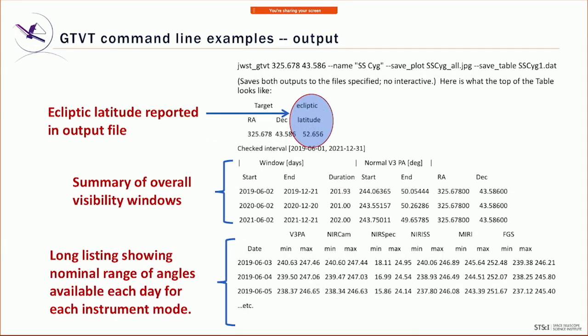The ASCII output of the general tool has a header that gives you the ecliptic latitude of your target — here SS Cygni is at 52 degrees, so we have one long observing period. It gives a summary for the time frame you ran it for, and the start and end of the visibility window with its duration — here 200 days. Below that it shows you day by day for several years the minimum and maximum position angle you can get for each of the six outputs: V3, NIRCam, and so forth.